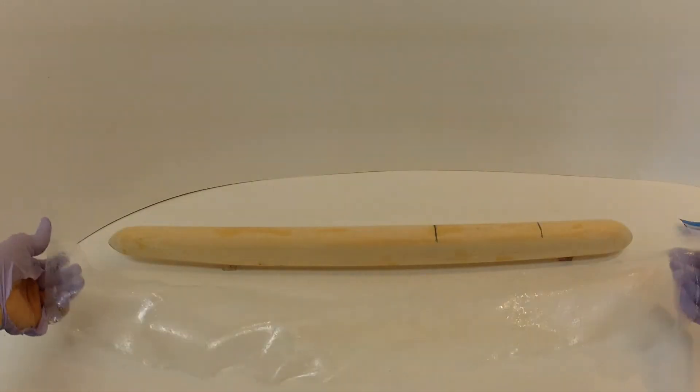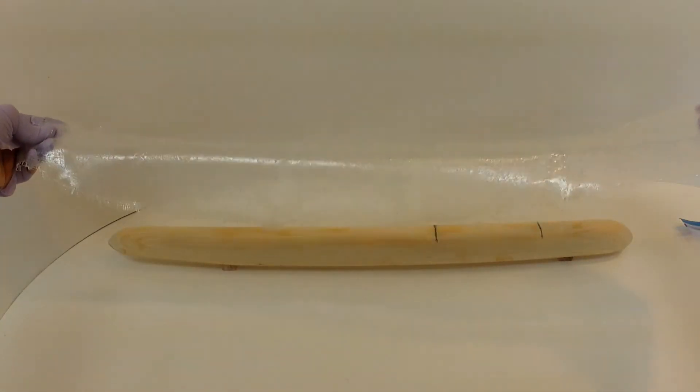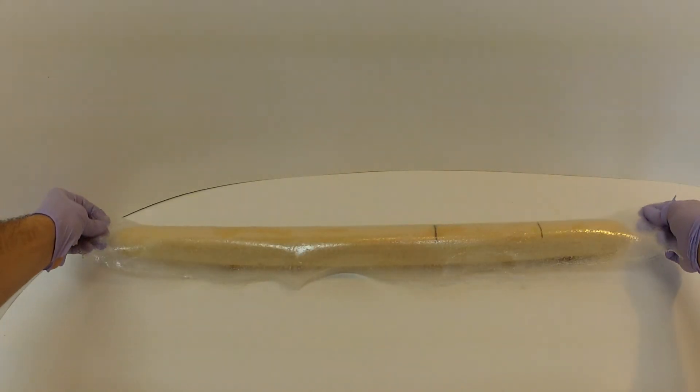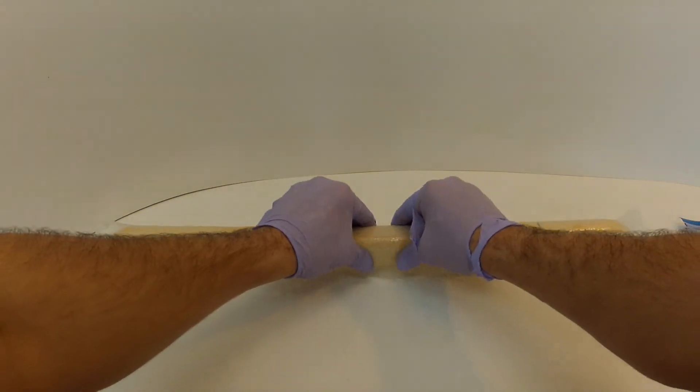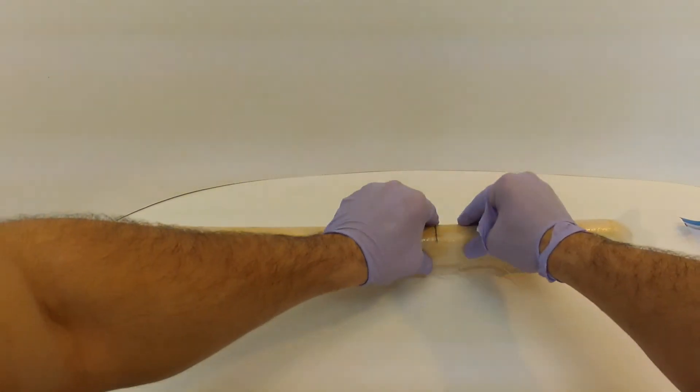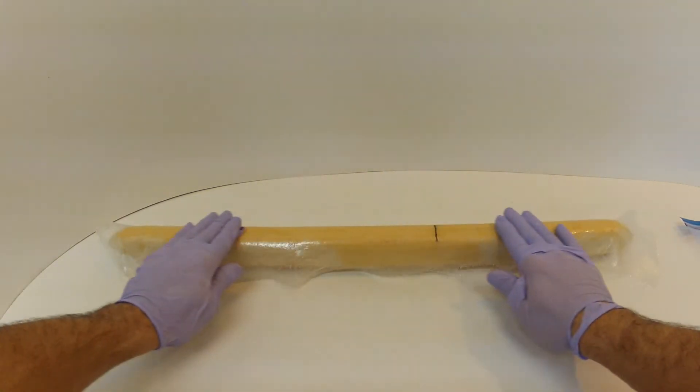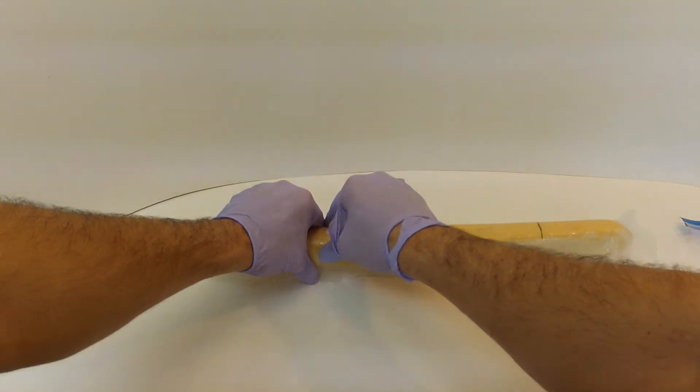So here we are - we are going to place the first already pre-soaked layer onto the fuselage. That is it, and then kind of just massage it onto the part.